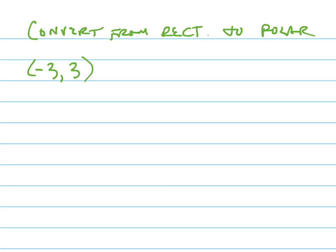We're going to convert the point negative 3, comma 3, the rectangular point negative 3, comma 3, into a polar coordinate.